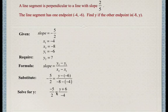Now, what we have here is a proportion, and we can solve proportions using cross multiplication. So we're going to multiply 2 times y plus 6, and negative 5 times negative 4.